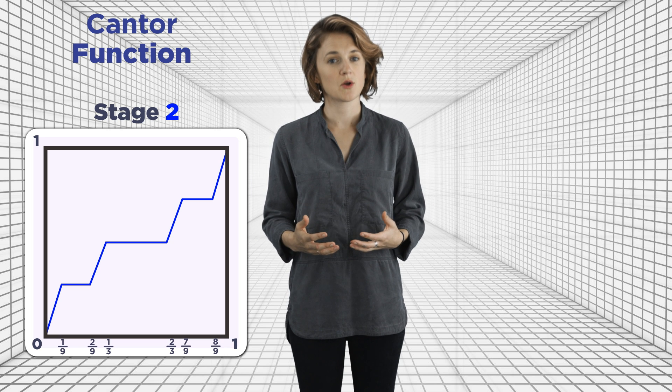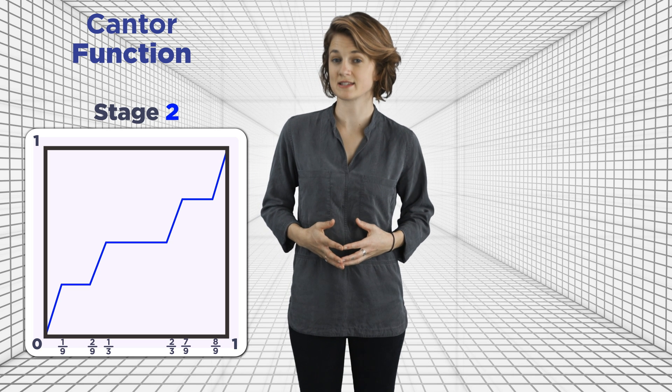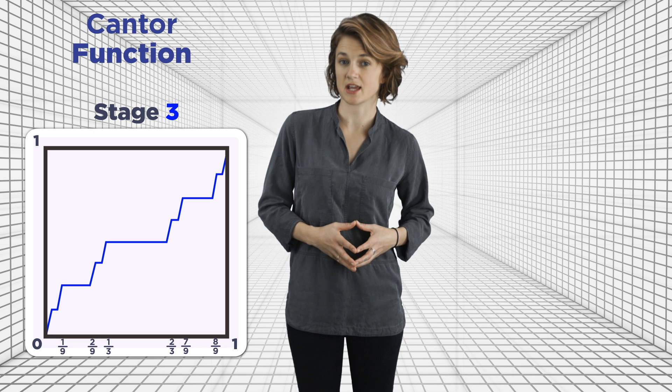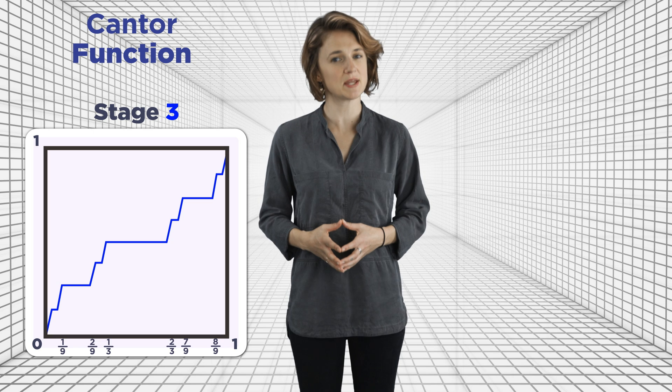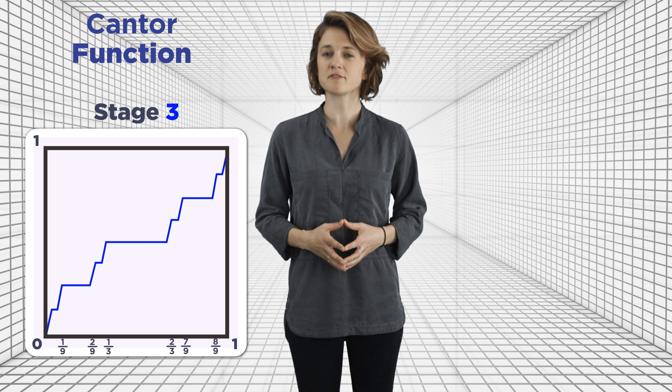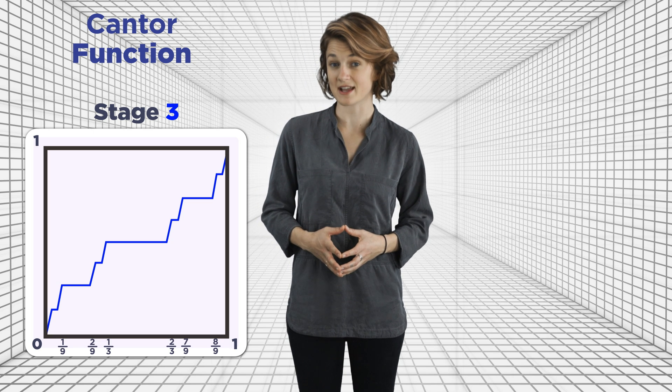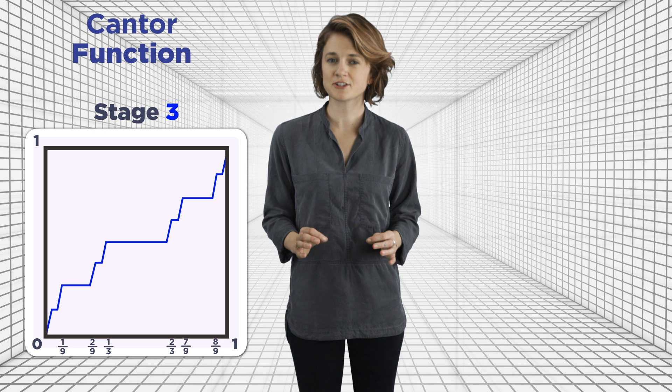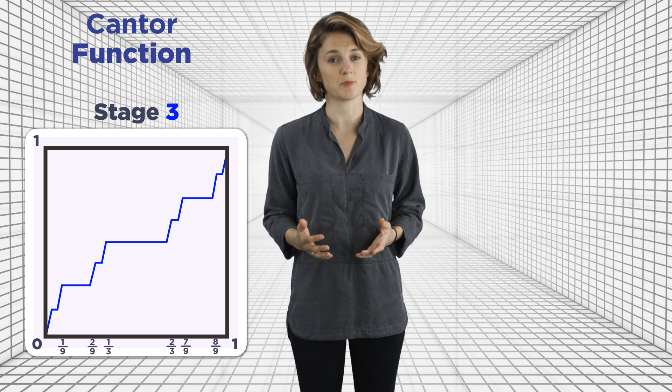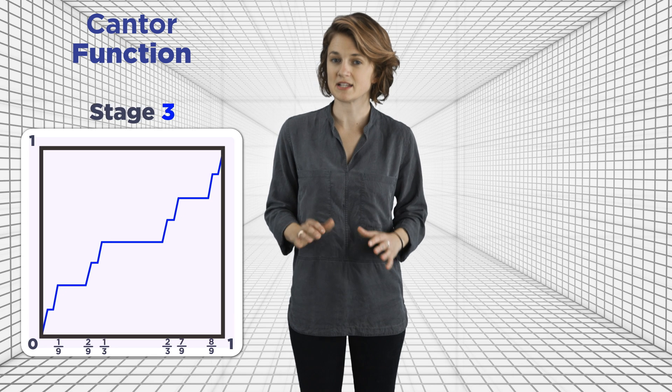At stage three, we add in four more flat lines like this. For each diagonal line in the previous stage, we replace its middle third with a flat line at the midpoint of its height, then fill in the remainder with diagonal lines. Then you just keep doing this. The Cantor function is the function you end up with after infinitely many stages.